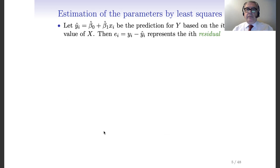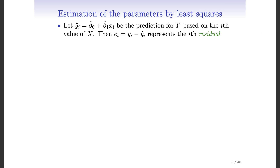How can we estimate these parameters? I consider the prediction ŷᵢ for the i-th datum xᵢ. I predict the output ŷᵢ, and of course this prediction will not be perfect. So I can compute the difference between the actual value of the target variable yᵢ minus its prediction ŷᵢ — this difference is called a residual.